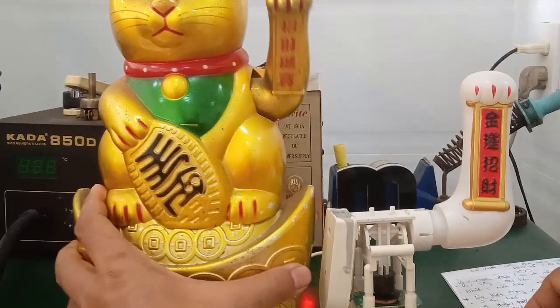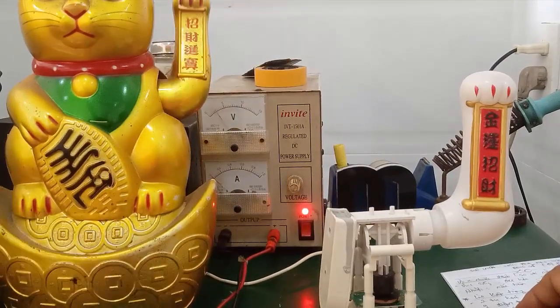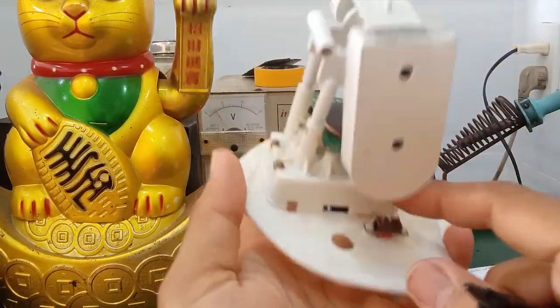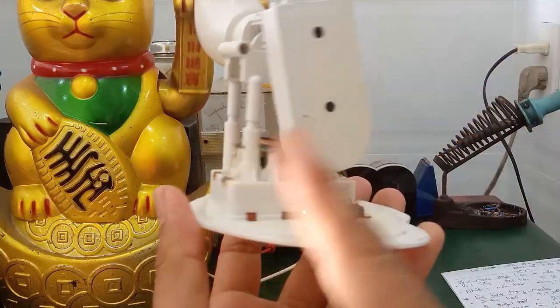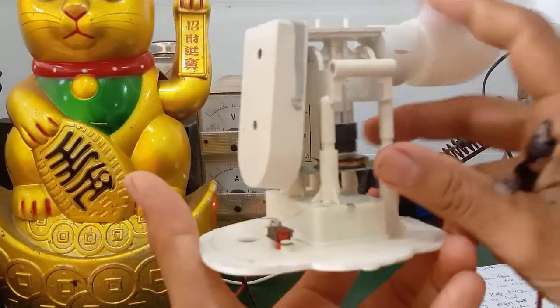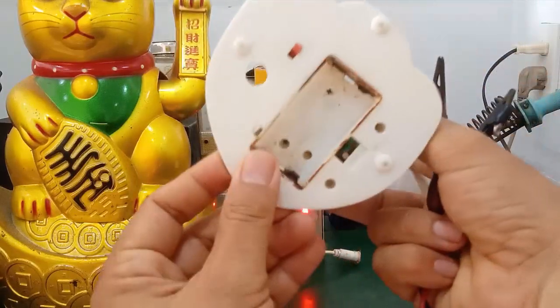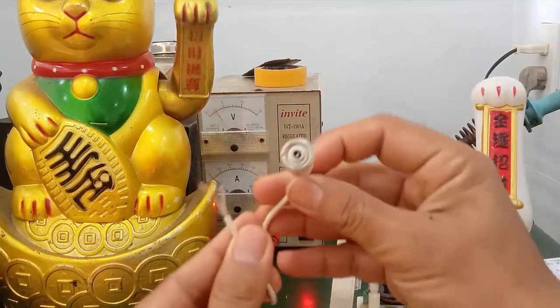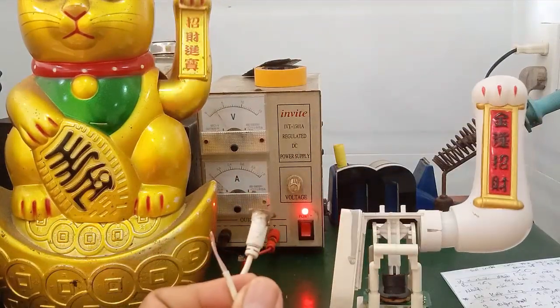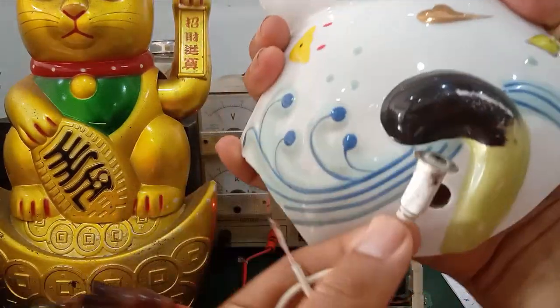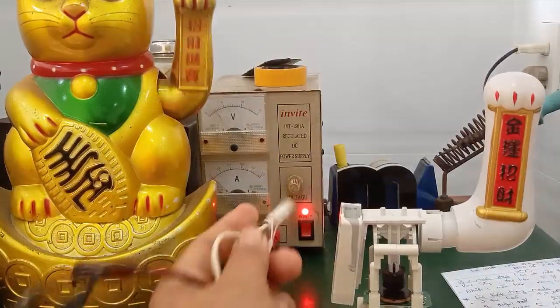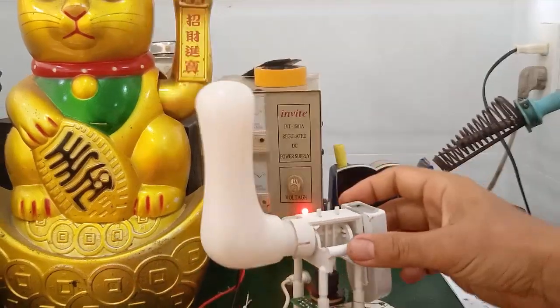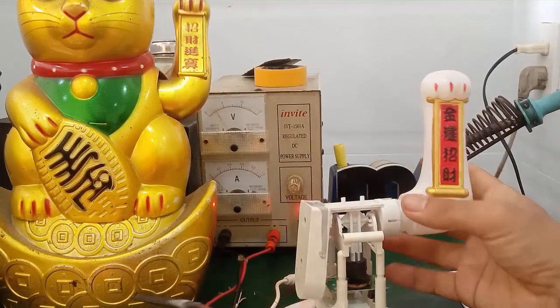Tiếp theo đây mình sẽ đi tìm hiểu về cái cấu tạo của cái tay mèo. Đây, cái mạch nó hoạt động như thế này. Ở đầu ra, bộ mạch nó sẽ có hai dây cộng trừ. Thì sẽ nối với một cái công tắc. Power Supply nó cấp nguồn là có pin bên phía dưới, hoặc là nó cấp nguồn bằng cái dắt DC. Cái dắt này nối vào phần đuôi của con mèo bằng sứ. Nối vào đây.